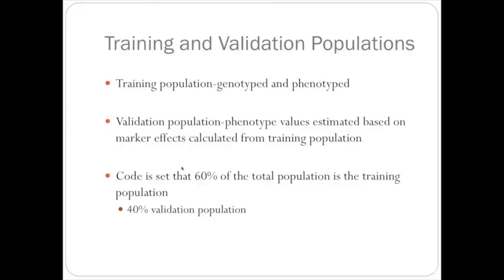In the code, I have it set so that 60 percent of the total population is the training population, while 40 percent is the validation population. Then we'll do correlations in the validation population of what was actually observed and what we predicted.